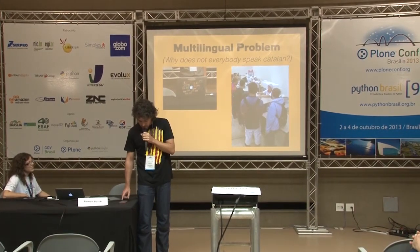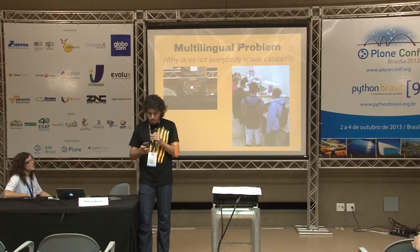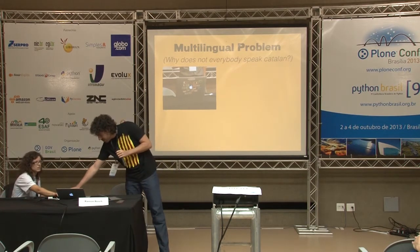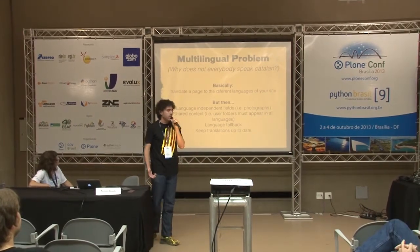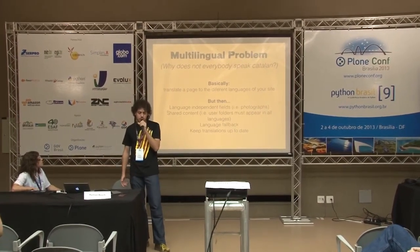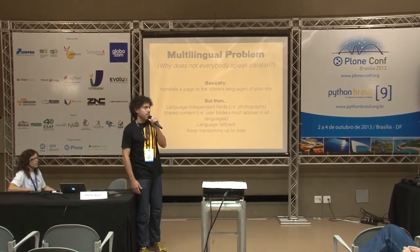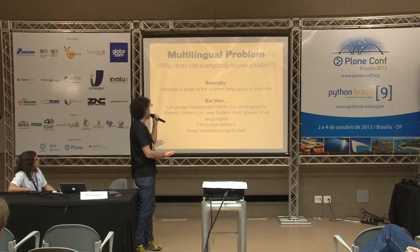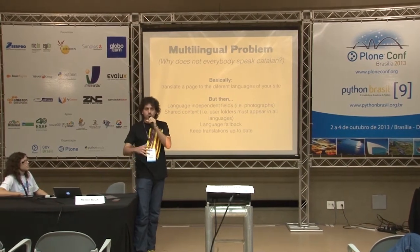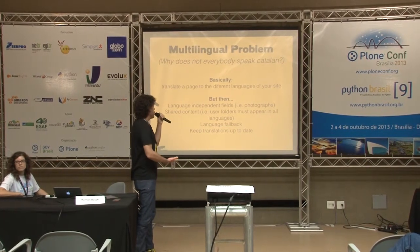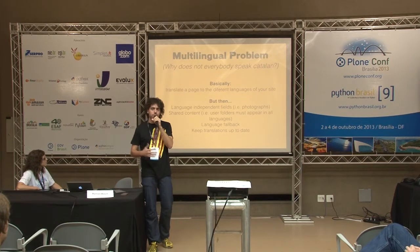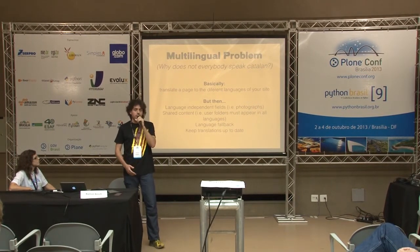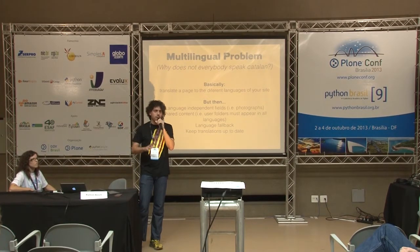We need some kind of solution in CMSs. What we need to do is translate the pages on your site so they are available in different languages. But this simple problem brings with it a lot of other consequences that need to be solved. For example, language-independent fields: on image fields, we need to copy the image to all the different translations. We also need to have shared content — maybe you have a manual in English and Spanish that you want to share on your webpage. And small sites that don't want to translate all pages want to share content between all different languages.